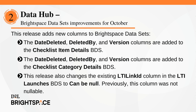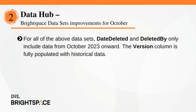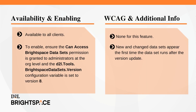Previously, this column was not nullable. Note that for all the above data sets, Date Deleted and Deleted By only include data from October 2023 onward, and that the Version column is fully populated with historical data. This feature is available to all clients. To enable, ensure the Can Access Brightspace Data Sets permission is granted to administrators at the org level, and the D2L.tools.BrightspaceDatasets.Version configuration variable is set to Version 8. Note that the new and changed data sets appear the first time the data set runs after the Version update.